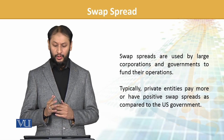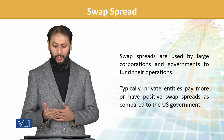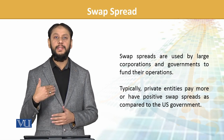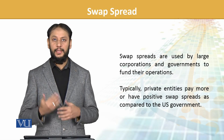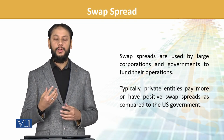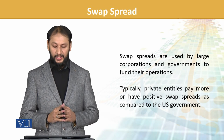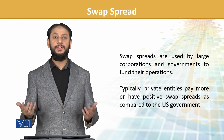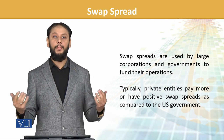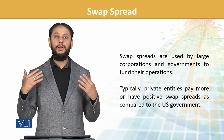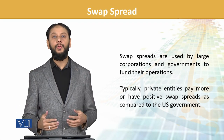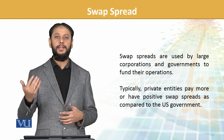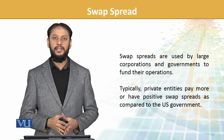Swap spreads are usually used by large corporations compared to government to fund their operations. Institutions come into this to build higher earning levels and make good money out of it. Typically, private entities pay more or have a positive swap spread as compared to the US government. When government-level transactions occur, risk perception is lower; when private parties are involved, risk perception increases and the swap rate is higher.